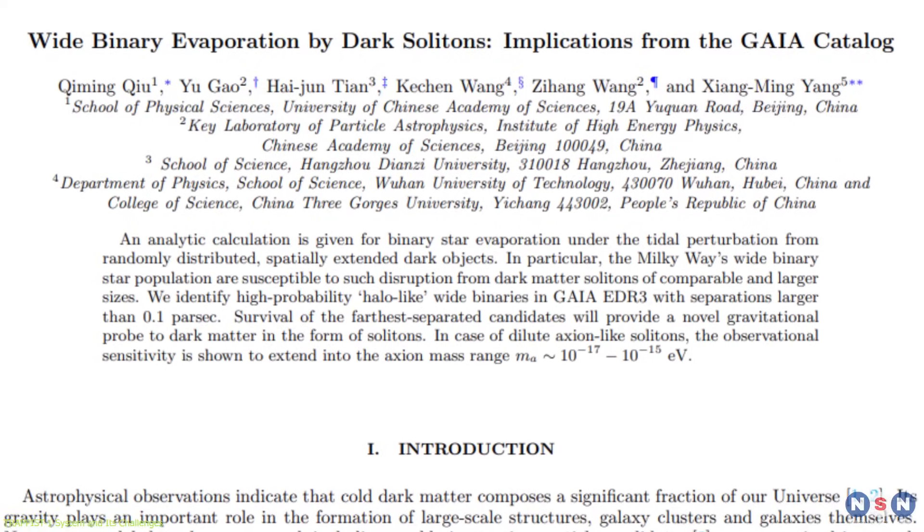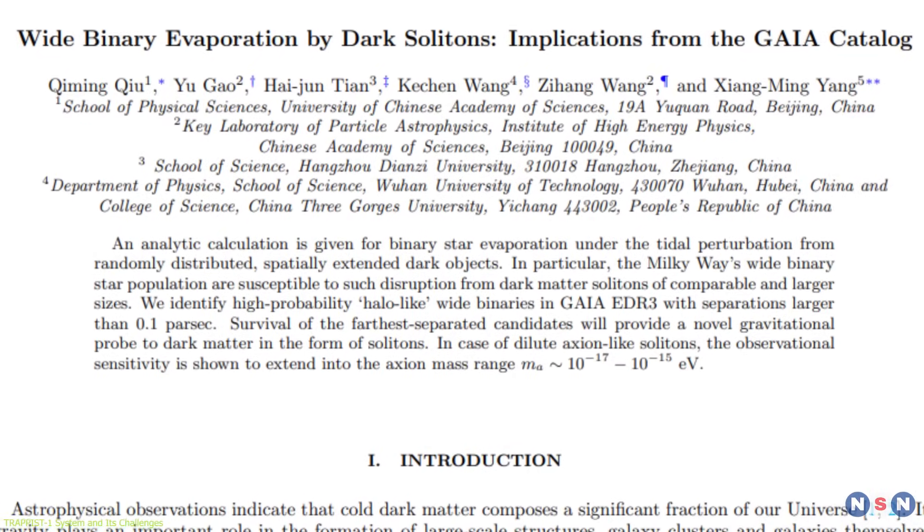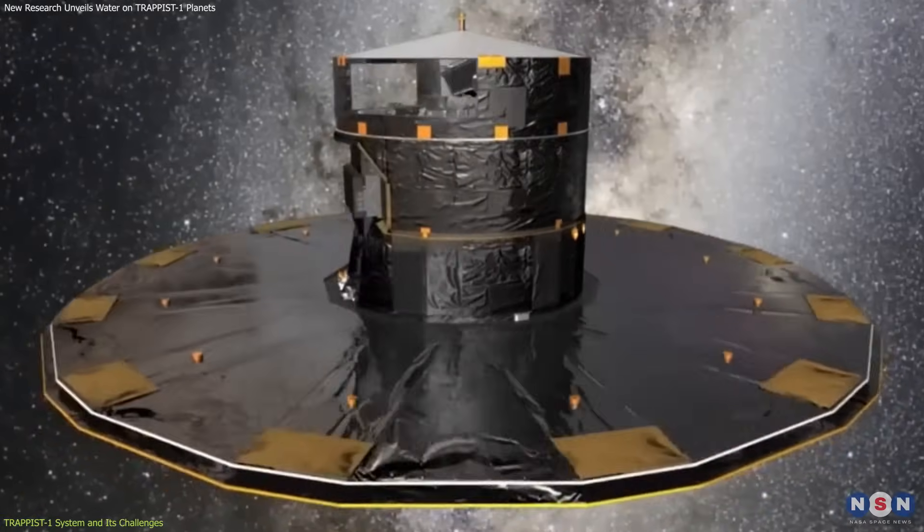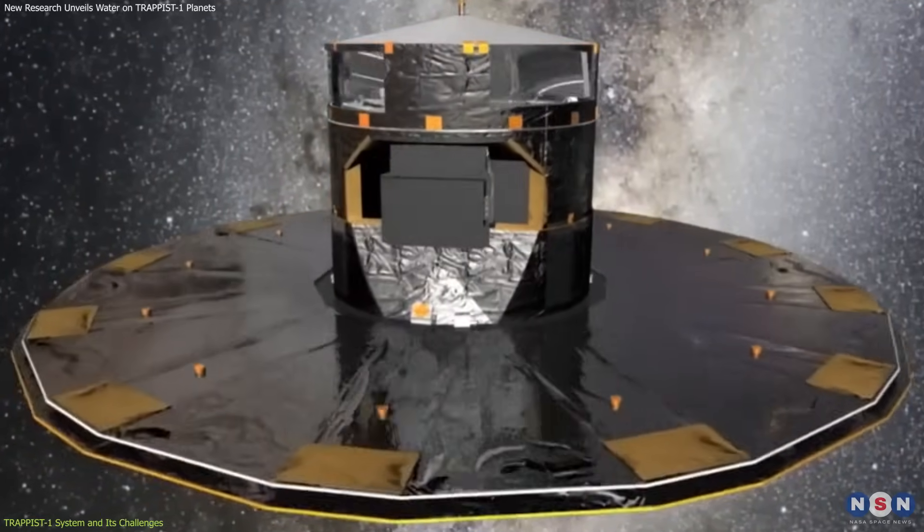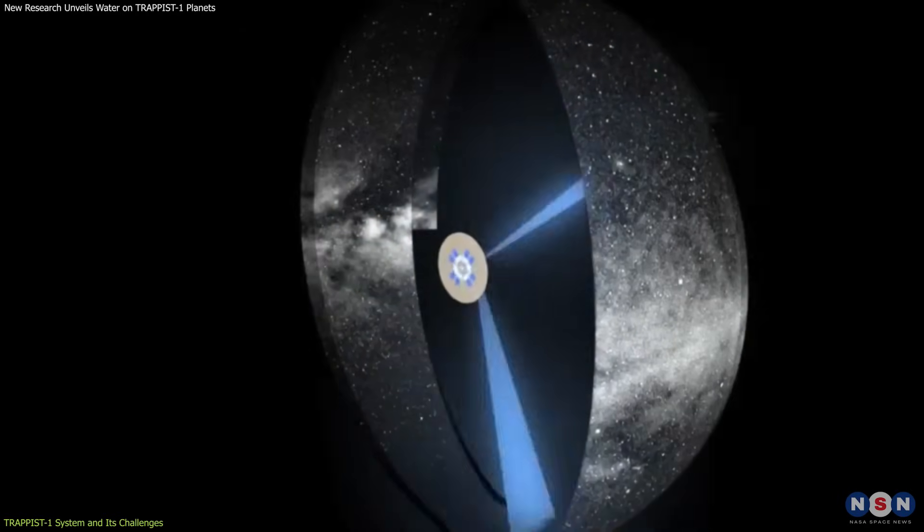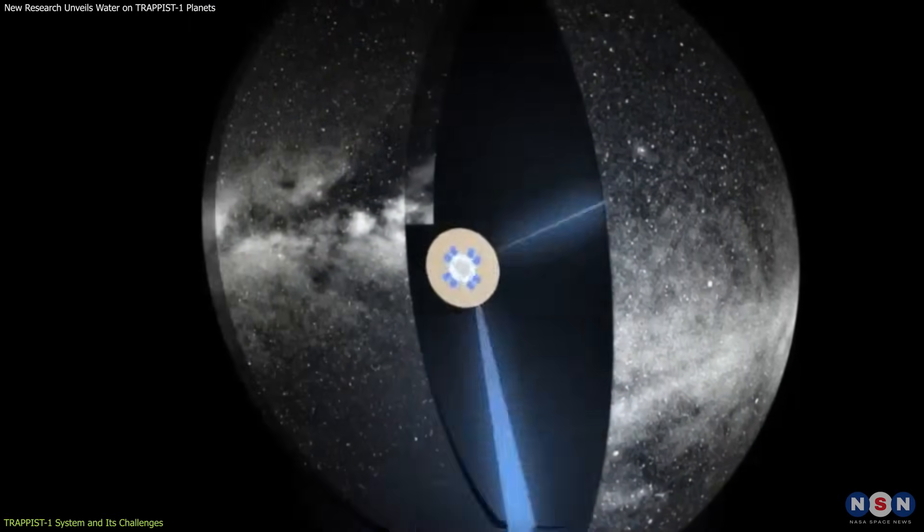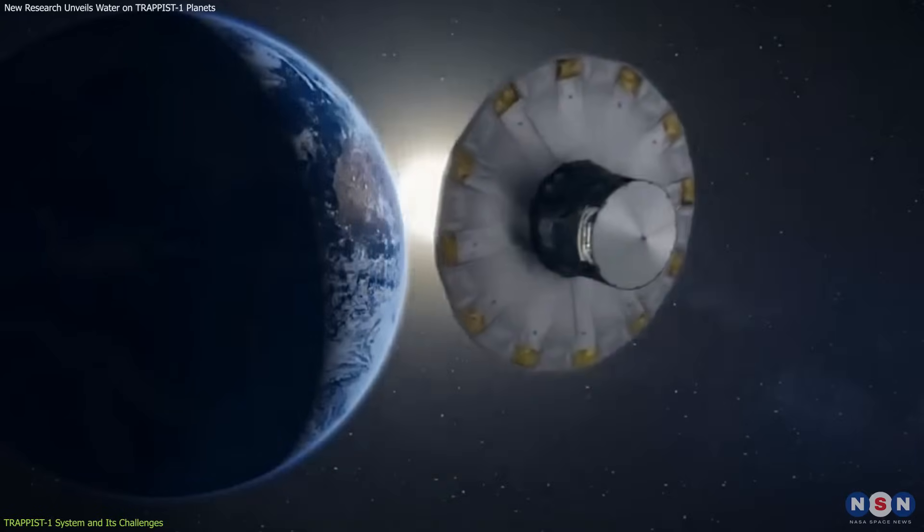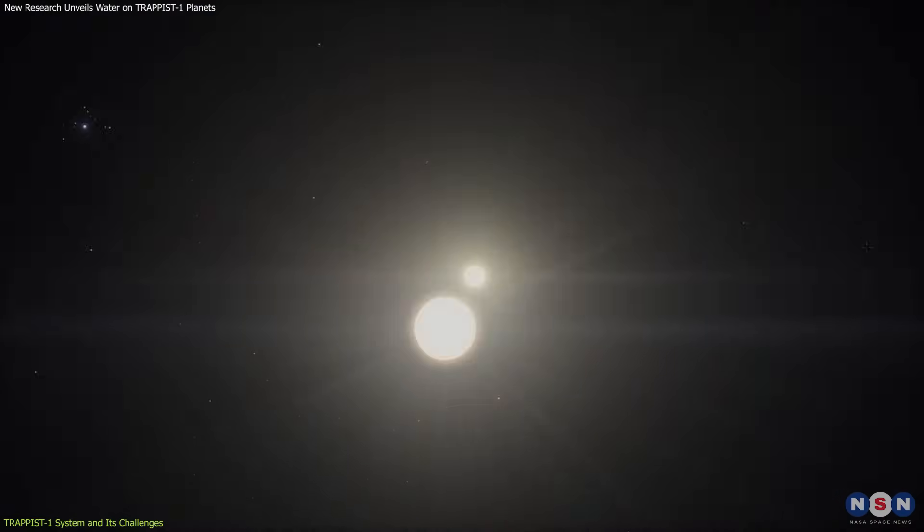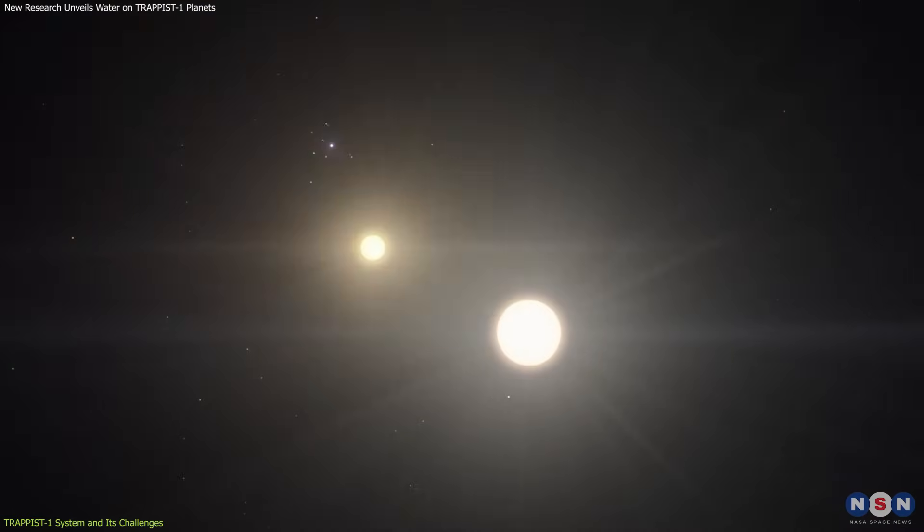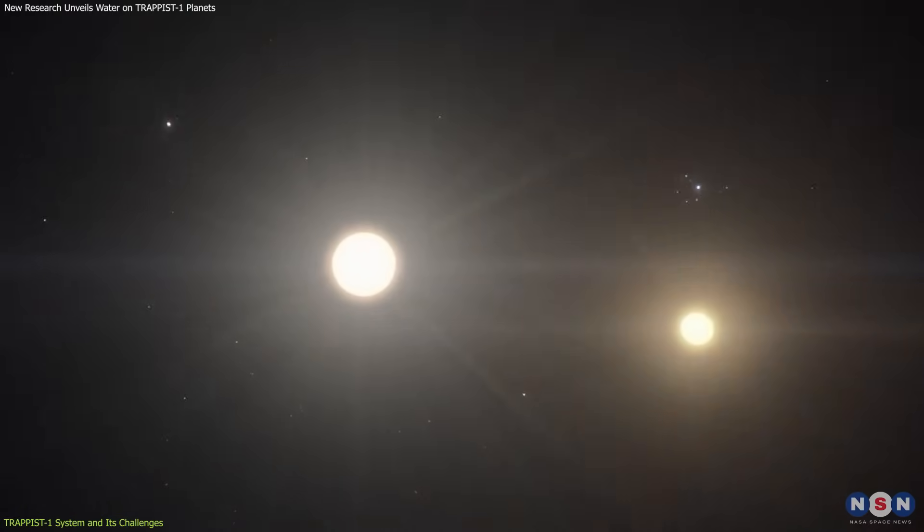Enter the study of binary star systems through the lens of the Gaia catalog. Gaia, a space observatory launched by the European Space Agency, has been meticulously mapping billions of stars in our galaxy with unprecedented accuracy. Its data on binary star systems, stars that orbit each other, are now providing clues that might just help us detect dark matter.